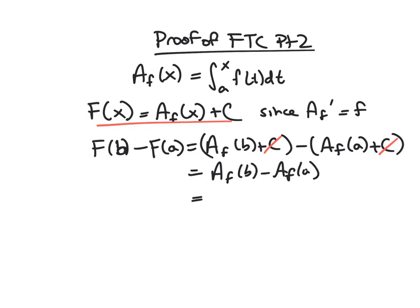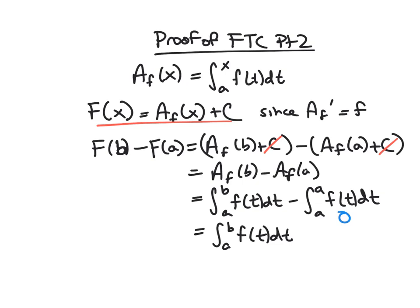We can reinterpret this: A_F(b) is the integral from a to b of f(t) dt, and A_F(a) is from a to a of f(t) dt. But this second one has no width - it's from a to a, so it's zero. So we get the integral from a to b of f(t) dt, and we can replace t with x. We got what we wanted.